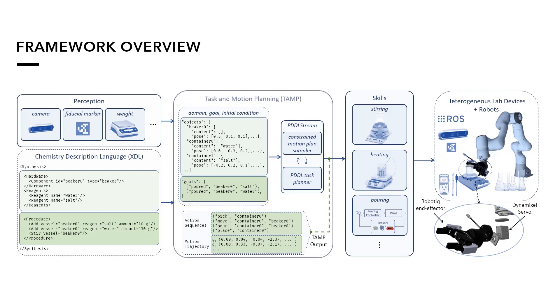Afterwards, it generates a task and motion plan with considerations for handling vessels with chemical reagents, allowing the robot to perform chemistry experiments autonomously.